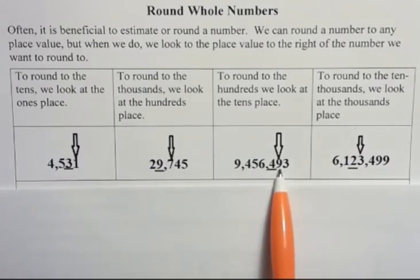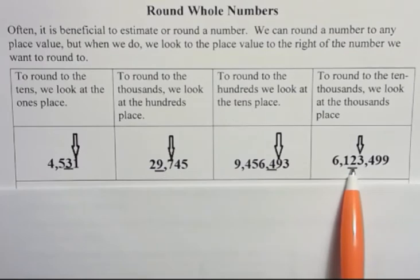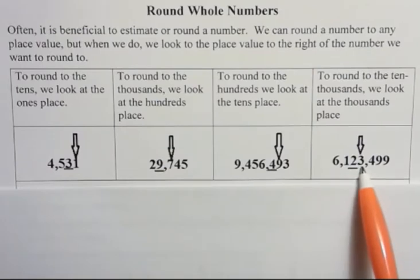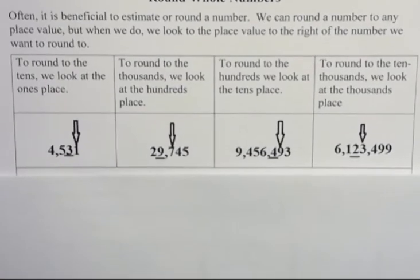If I want to round to the ten thousands, then I look to the thousands place. I'm always looking one to the right of where I actually want to round. That's an important fact to remember.